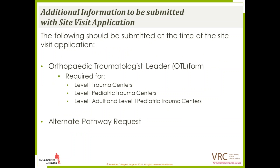When you turn in your application, you also need to turn in your OTL form and any alternate pathway requests. For Level 1 trauma centers — Level 1 pediatric, adult, or combined Level 1 and Level 2 PEATs — we require an OTL form. If you're working in conjunction with an adult or pediatric trauma center that utilizes the same OTL (orthopedic trauma leader), you do not need to complete the entire form; you can submit just one. If you're unsure whether we already have one on file, reach out to Anita at cotvrc@facs.org and she'll confirm that.